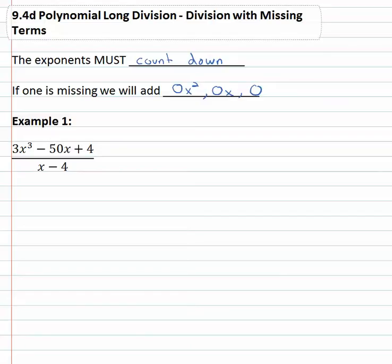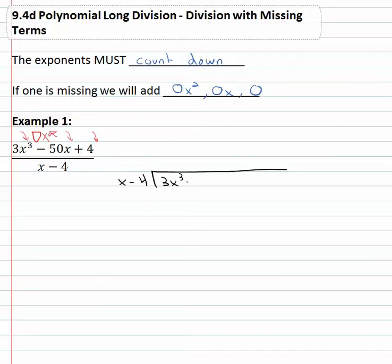For example, if we have three x cubed minus fifty x plus four over x minus four, you notice the exponents counting down: we've got x to the third, first, and zero, which makes the variable go away. We've got three, one, zero — we're missing the x squared. So what we will do is account for it by adding zero x squared as we set up our long division, with x minus four out front dividing into three x cubed plus zero x squared minus fifty x plus four.